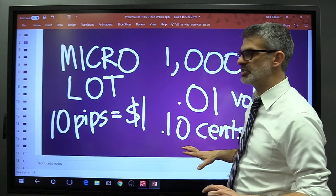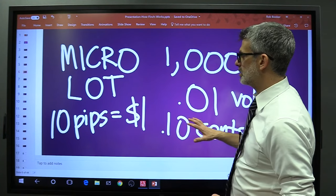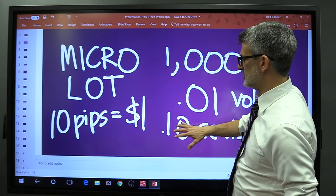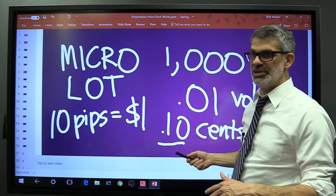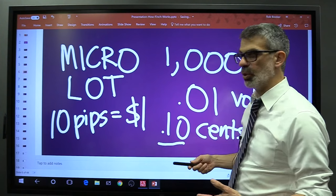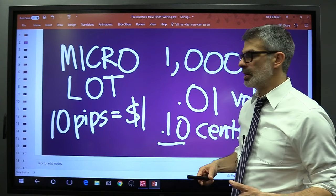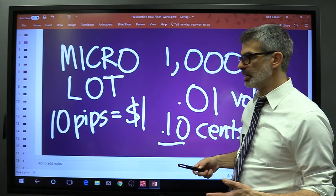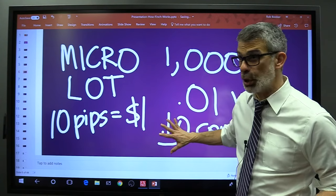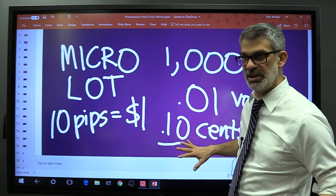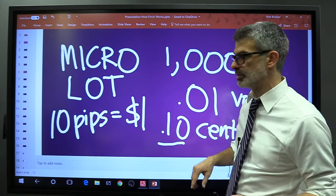Now, these numbers are approximate. For most currencies, this is exactly what it will look like. If you're trading the Japanese yen, it might be seven or eight cents per pip. If you're trading the British pound Australian dollar, it might be 13 cents a pip, or some other number close to this number.